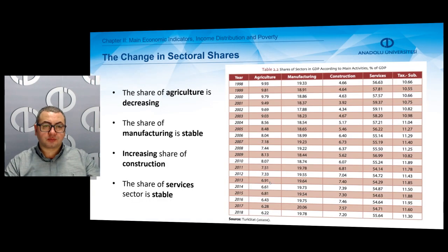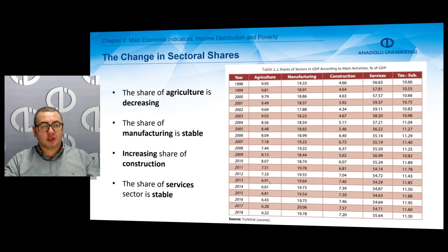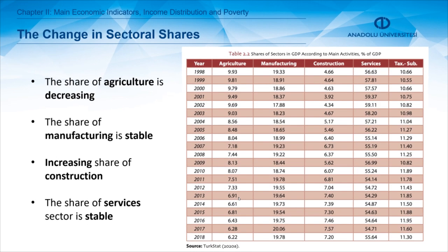Let's start with the shares of sectors in GDP in the Turkish economy. When we look at agriculture, we see that the share of agriculture is decreasing — it started with 9.19 percent in 1998 and ended with 6.22 percent in 2018, showing a stable declining share.